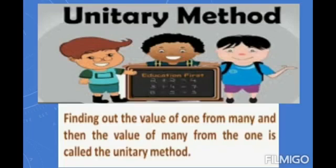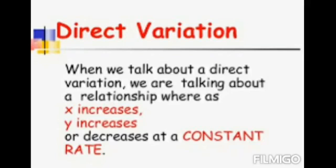Today we will continue with the unitary method. Finding out the value of one from many, and then the value of many from the one, is called the unitary method. There are two types of variations in the unitary method. The first one is direct variation: when one quantity increases the other also increases, or if one quantity decreases the other also decreases, at a constant rate.